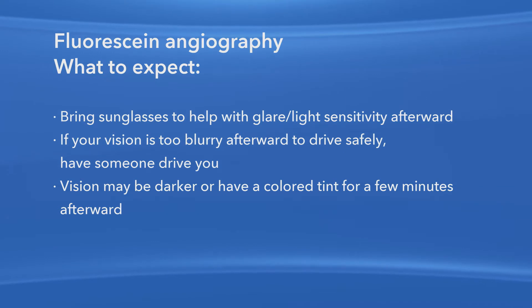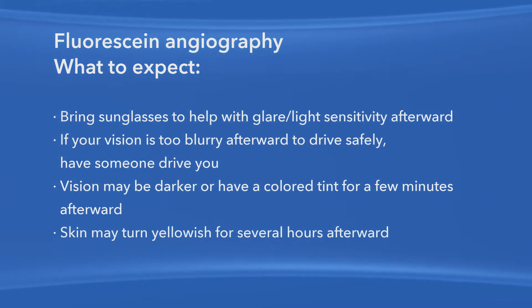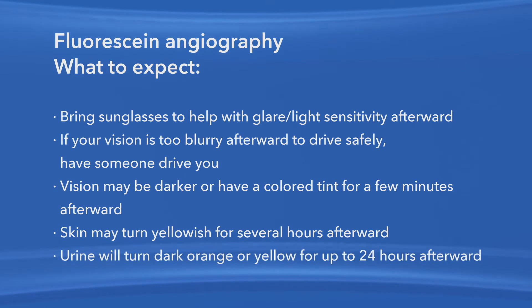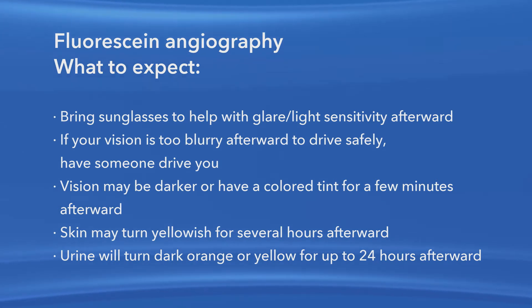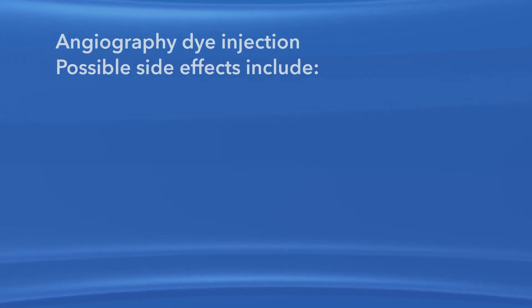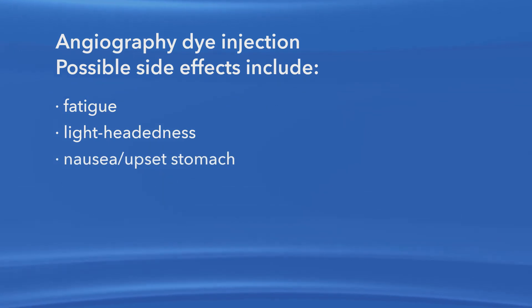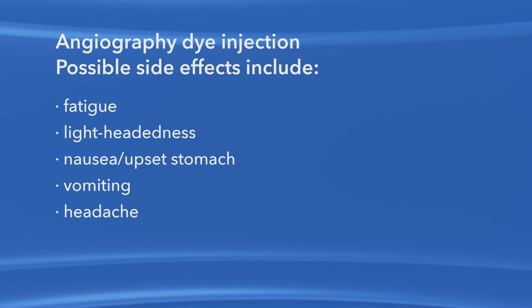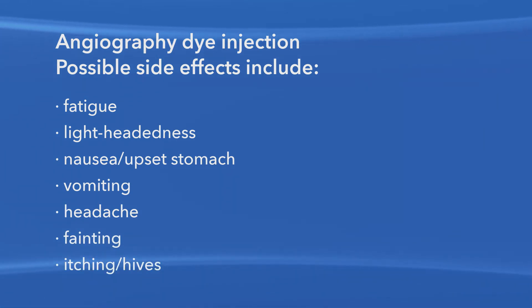After the fluorescein dye is injected, your skin may turn yellowish for several hours. Also, because your kidneys remove the dye from your body, your urine will turn dark orange or yellow for up to 24 hours following the test. Some people may feel tired, lightheaded, or nauseous after having the dye injected. Also possible are vomiting, headache, fainting, itching, or hives. Alert your ophthalmologist if you experience any of these side effects.